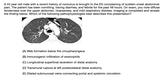Which of the following pathophysiologies best describes this presentation? Or E, dilated submucosal veins connecting portal and systemic circulation? Pause the video if you want some time to think about this question.